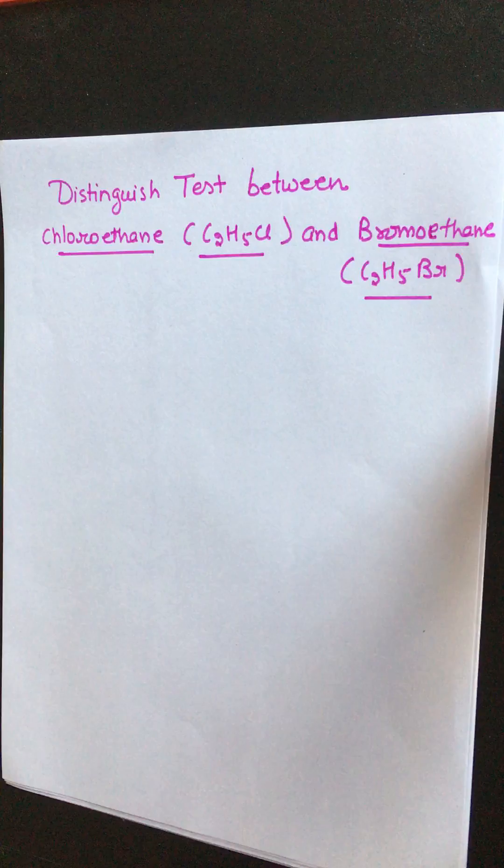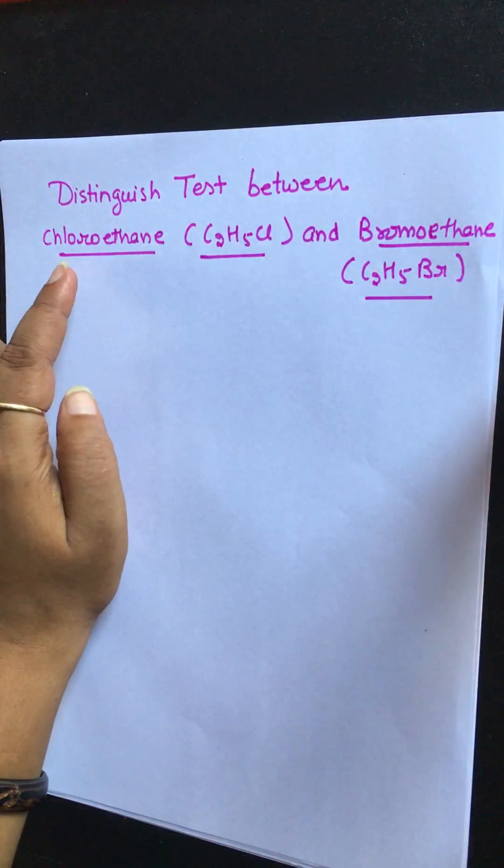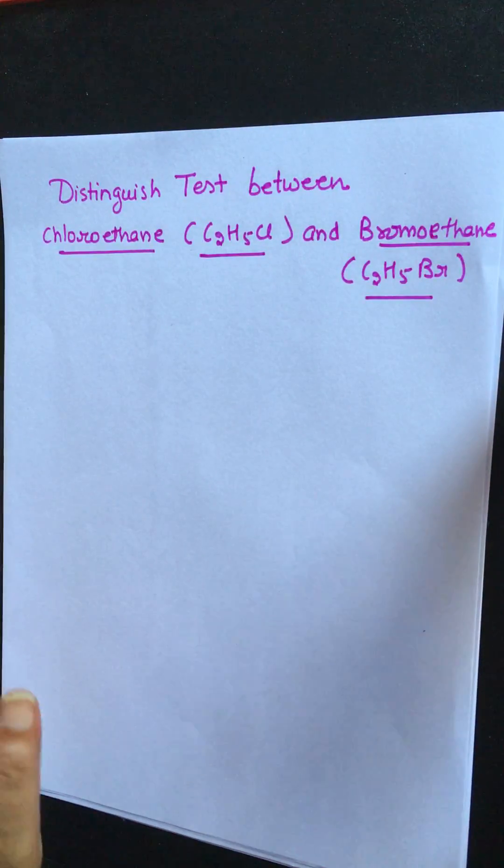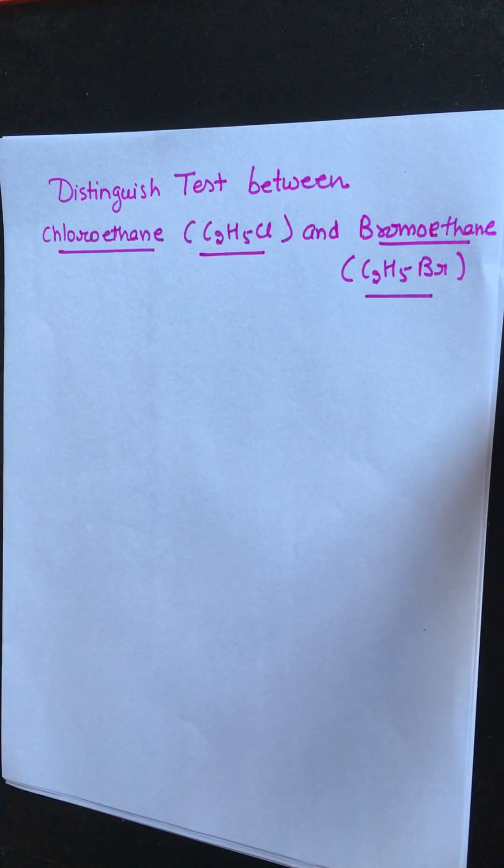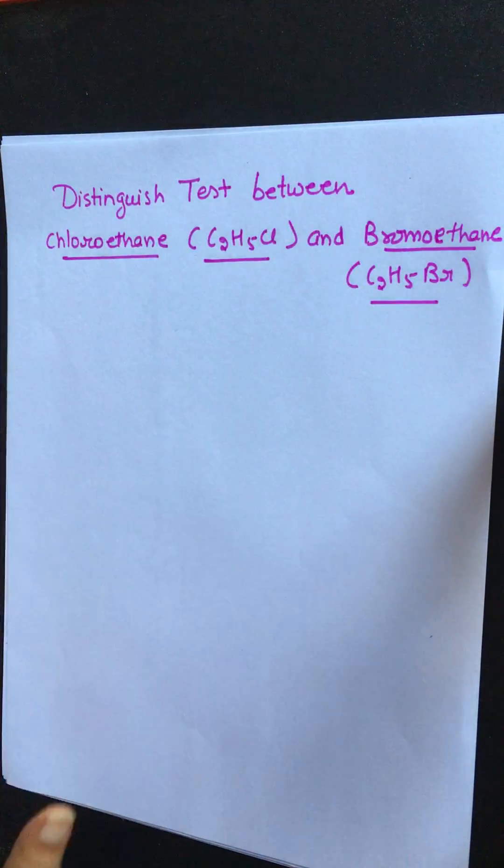How? Firstly we have to do a substitution reaction. If the reaction of chloroethane and bromoethane takes place in presence of aqueous alkali, then these halogens will substitute as halide ions - meaning chloride ion and bromide ion.